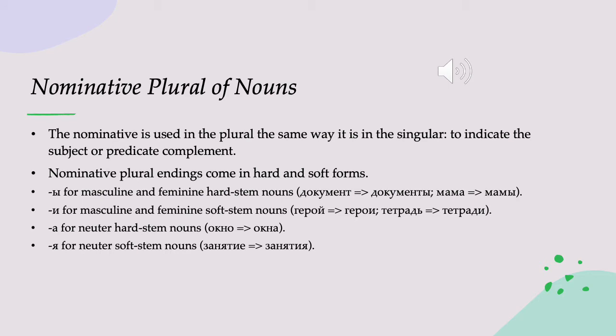Let's start off with a quick discussion of what is the nominative plural. The nominative plural is the plural form of nouns in the nominative. It's used to indicate the subject or the predicate complement — the subject of a verb, whatever is doing the action in the sentence, or the predicate complement, so when something is something, that something that it is is also in the nominative.